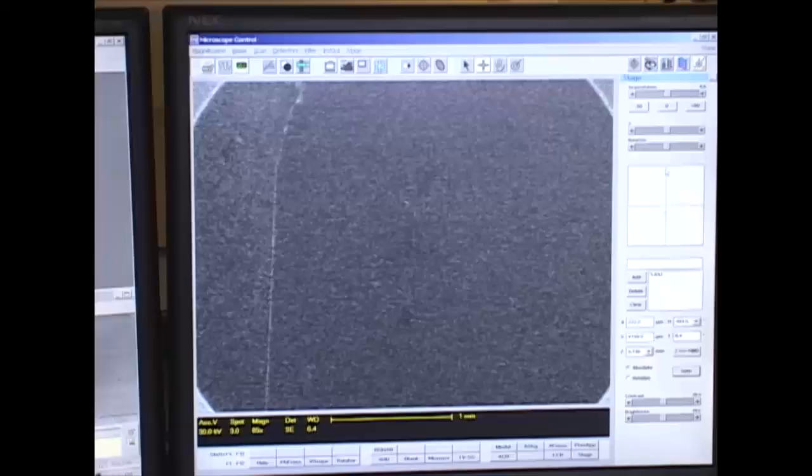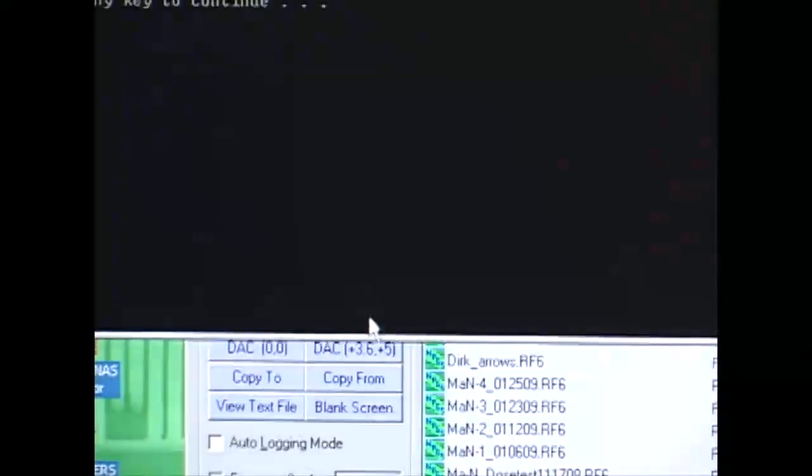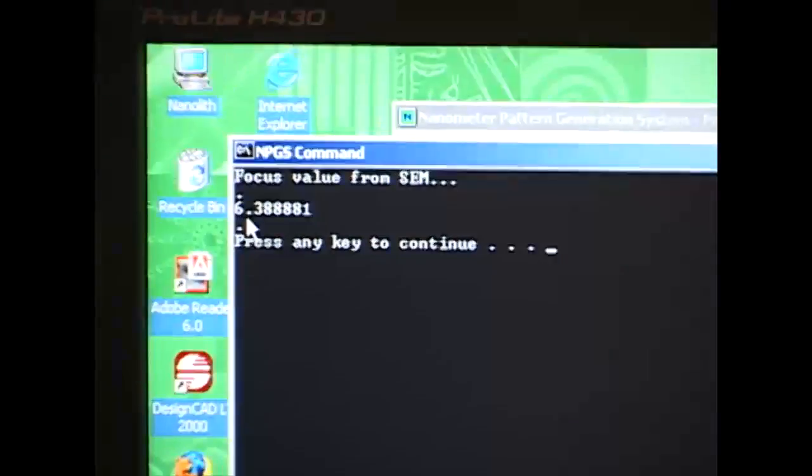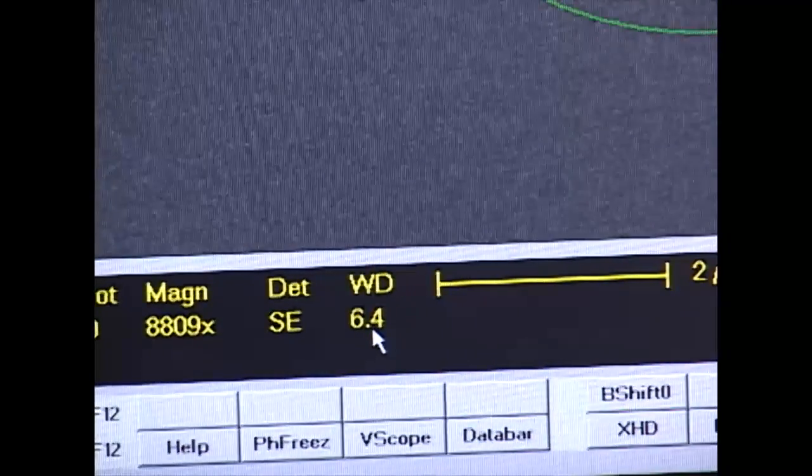So the beam blanker is now in the control of the NPGS computer. I'll also test that it's reading the working distance correctly. I click read working distance. It gives me a value of 6.38, which agrees with the 6.4 I'm reading from the SEM computer.